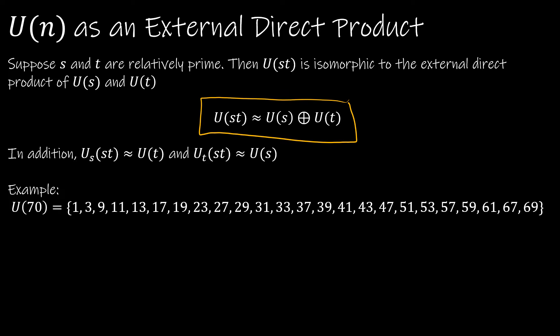So let's look at an example of U(70). U(70), I've listed all of the elements. The order of U(70) is 24. There are 24 elements in that set. So why did I pick such a large group? Well, I wanted to take a look at what are the factors of 70. So what is the prime factorization of 70? Well, 70 is equal to 2 times 5 times 7.